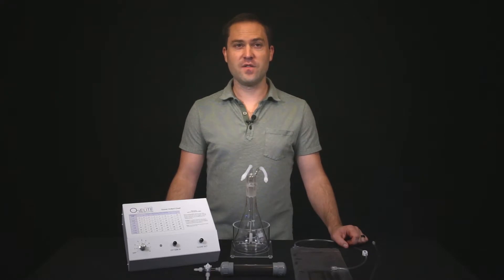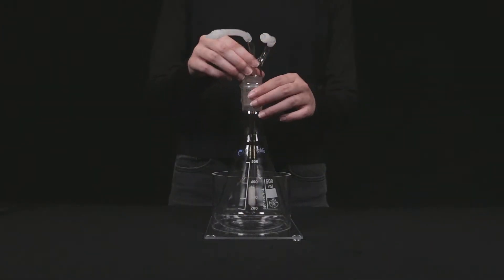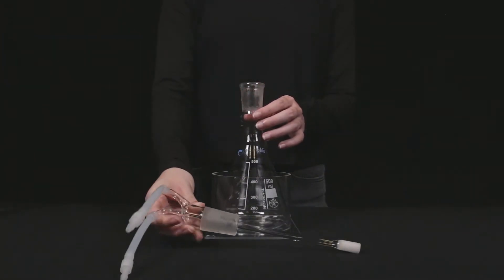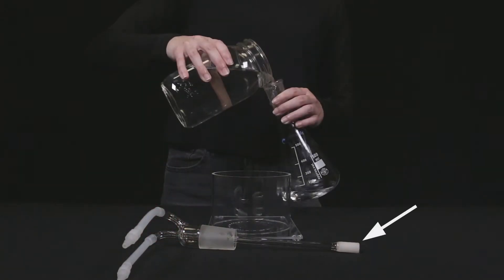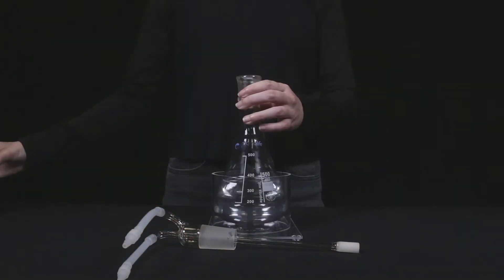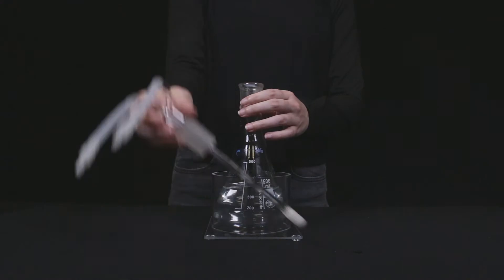Before connecting the humidifier, first you will want to fill it to the correct water level with either distilled or purified water. For the case of the 500ml bubbler humidifier combo, you will want to take the stem out, fill the jar until the diffuser is covered, put the stem back in the jar, and place the jar in its stand.